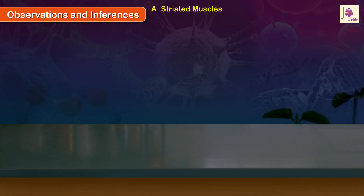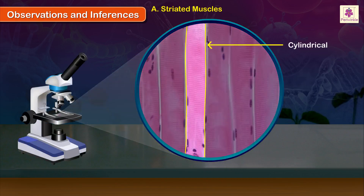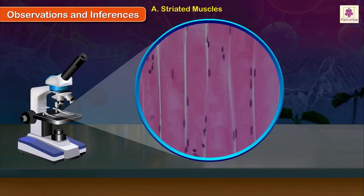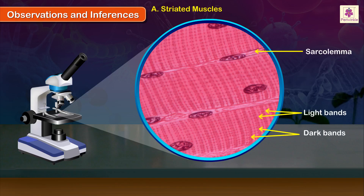Striated Muscles: The muscle fibers of striated muscles are cylindrical and unbranched. Each cell is enclosed in a cell membrane called sarcolemma. These muscle fibers show alternate dark and light bands, giving them their characteristic striated appearance. Hence, they are called striated muscle fibers. The striations are prominent.